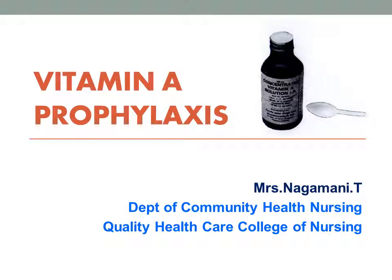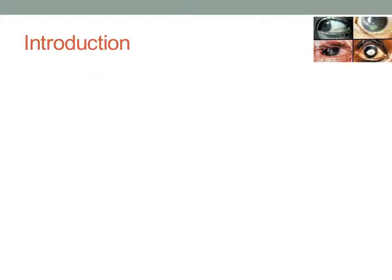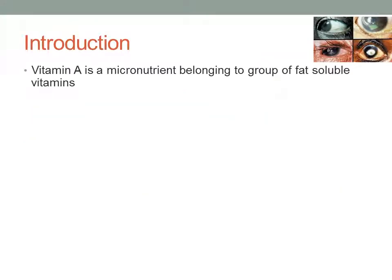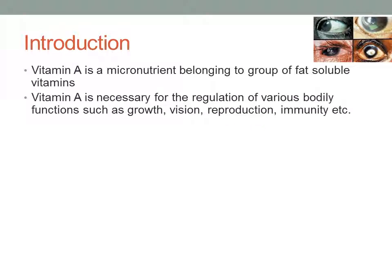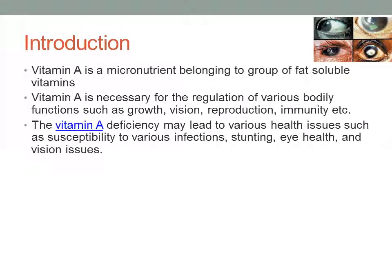Hello friends, welcome back to my lectures. Today we are going to discuss about the Vitamin A Prophylaxis Program. Vitamin A is one of the micronutrients which belongs to fat-soluble vitamins. It is necessary for the regulation of various bodily functions like growth and development, normal vision, and color vision, as well as reproduction, and it also boosts our immune system.